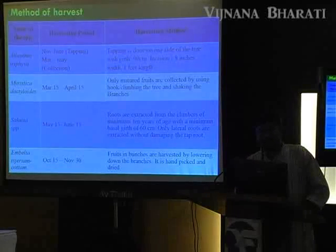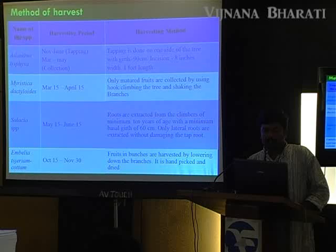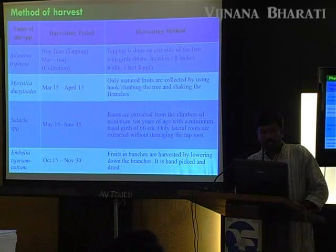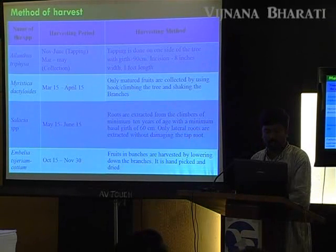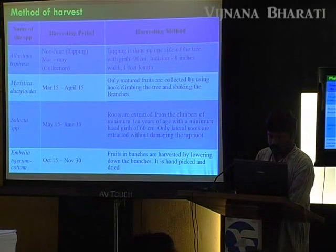The recommendations are: the best harvesting period for Ailanthus triphysa is November to June, or March to May. For Myristica dactyloides, March 15th to April 15th is best. For Celastrus species, May 15th to June 15th. For Emblica officinalis, October 15th to November 15th. This represents a merging of traditional knowledge and scientific information.